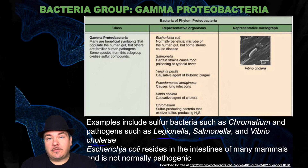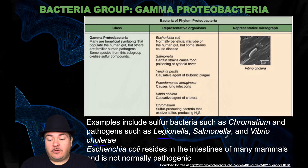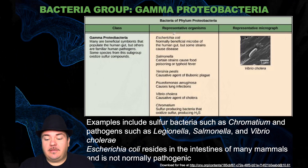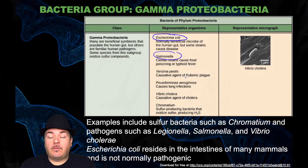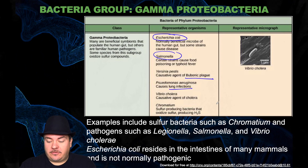E. coli is also in the gamma proteobacteria group. It resides in the intestines of many mammals and is not normally pathogenic. Other things you might have heard of because they cause human disease include Salmonella, the bacteria that cause bubonic plague, ones that can cause lung infections, and ones that can cause cholera.